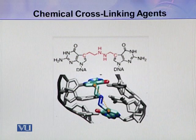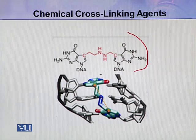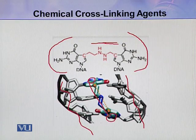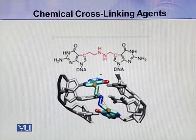Here you can see this interstrand crosslink. This is one guanine and this is another guanine, and this is the nitrogen mustard bridging between the two guanines. Here you can see this is one strand and this is the second strand, and in this way the two strands are linked to each other by this nitrogen mustard crosslink.